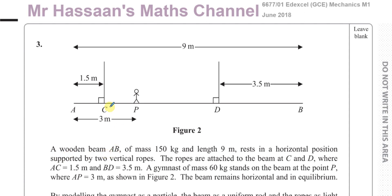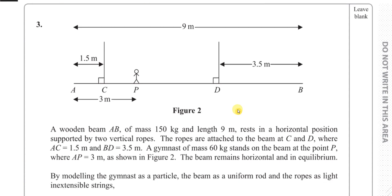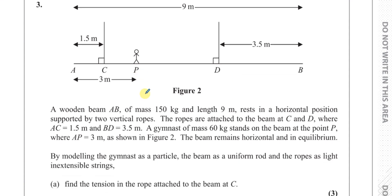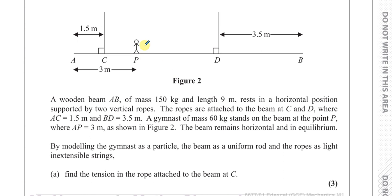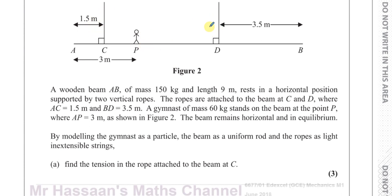It says a wooden beam AB of mass 150 kilograms and length 9 meters rests in a horizontal position supported by two vertical ropes. The ropes are attached to the beam at C and D where AC is 1.5 meters and BD is 3.5 meters. A gymnast of mass 60 kilograms stands on the beam at point P where AP is 3 meters. The beam remains horizontal and in equilibrium. By modelling the gymnast as a particle and the beam as a uniform rod and the ropes as light inextensible strings, find the tension in the rope attached to the beam at C.